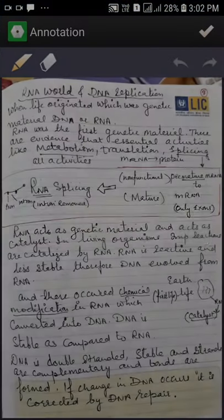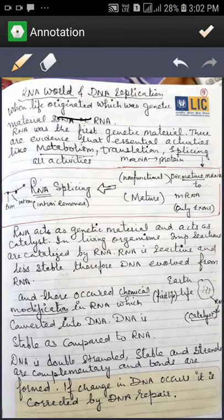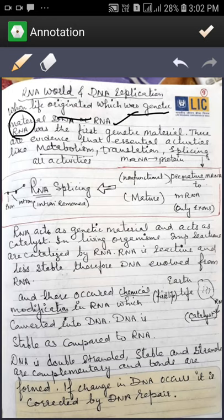So when life originated, which was the genetic material, whether it was DNA or RNA, that was the question. RNA was the first genetic material. There are evidences that prove that RNA was the genetic material when life originated.